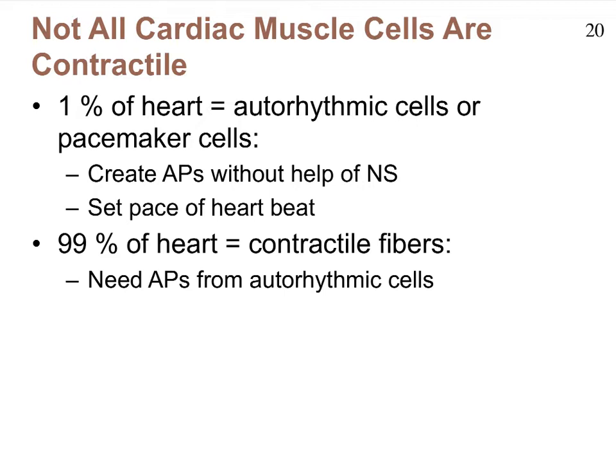There are actually two types of muscle cells present. The majority are your typical contractile fibers that will be depolarized as a result of action potentials arriving from yet another group of muscle cells that make up only about one percent of the heart muscle tissue. We refer to these cells as auto-rhythmic cells or pacemaker cells.